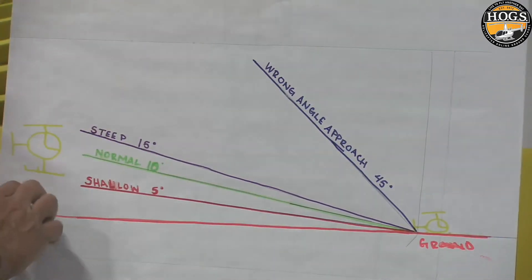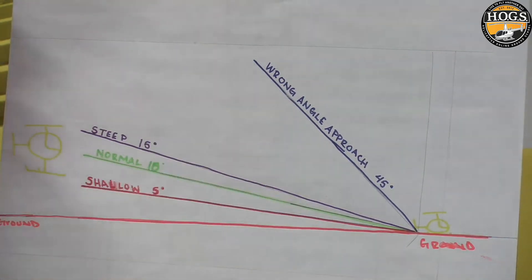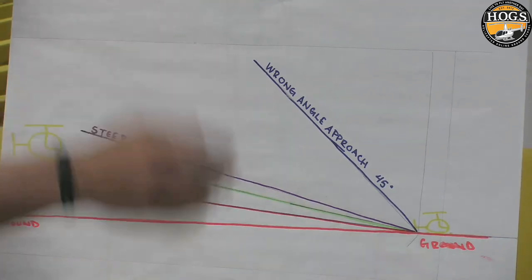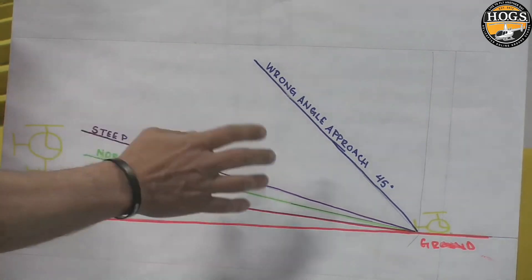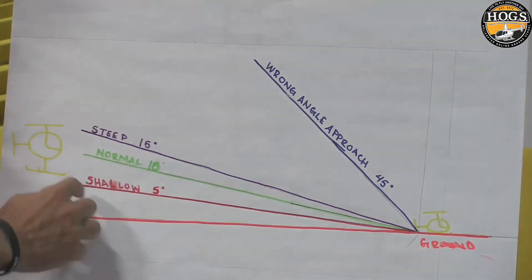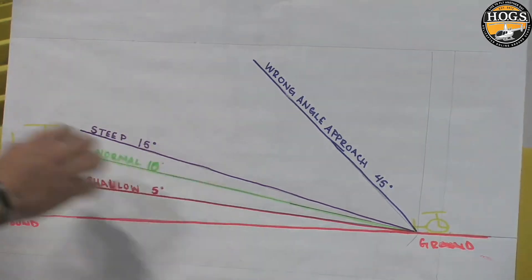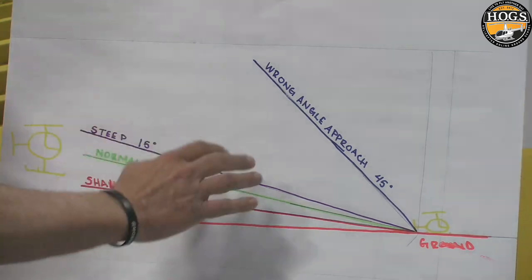Checkride question — private, commercial — the examiner can ask you: what's 5, or what's a normal? It's 10. What's a shallow? It's 5. What's a steep? 15.